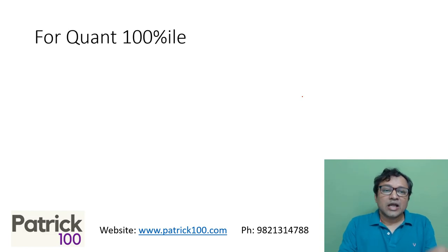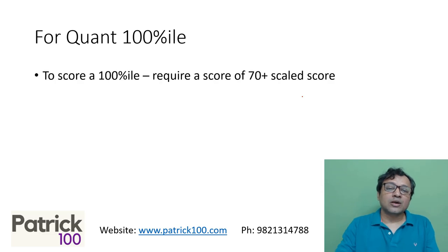So considering this, if I want to score a 100 percentile in QUANT, technically I should have a scale score of 70+. Since we can't predict the difficulty level of paper, let's look at generally how to score a 70 plus in the QUANT section.